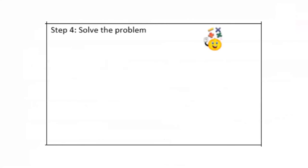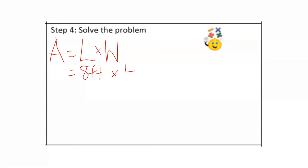This problem really has two parts because I need to find the area and the perimeter of the bulletin board. I'm going to solve for area first. I know area = length × width. The length of the bulletin board is 8 feet; I'm going to multiply that by the width, which is 4 feet. Eight times four equals 32 square feet, so the area of the bulletin board is 32 square feet.